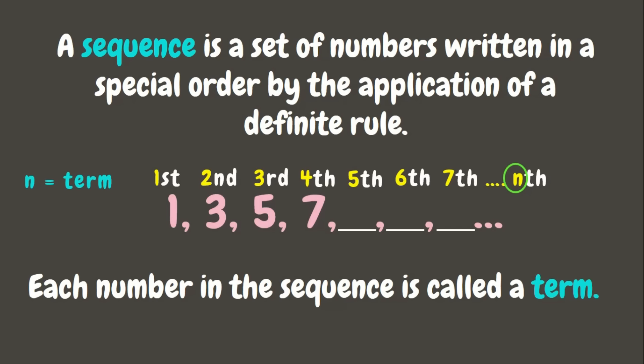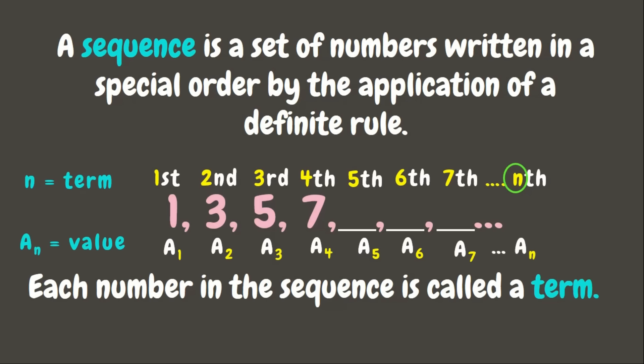We represent the order of a term by the letter n. Each value of a term can be represented as a sub 1 for the first term (which is 1), a sub 2 for the second term (which is 3), a sub 3 (which is 5), a sub 4 (which is 7), and so on up to a sub n, which represents the value of each term.